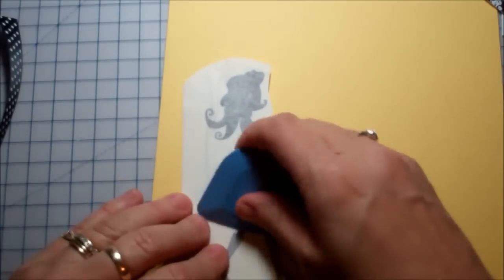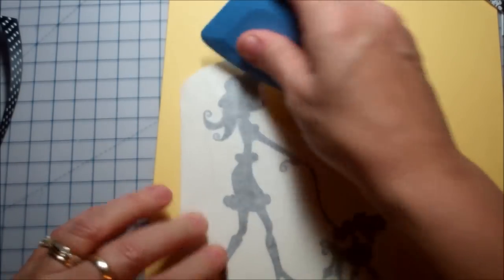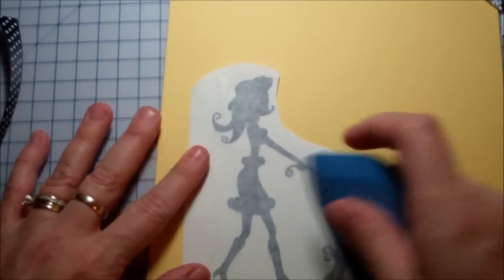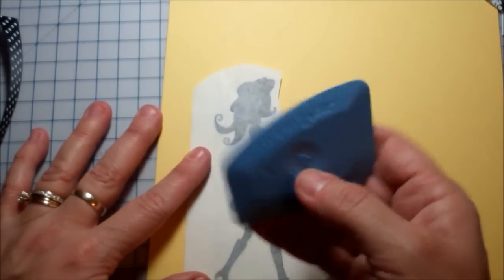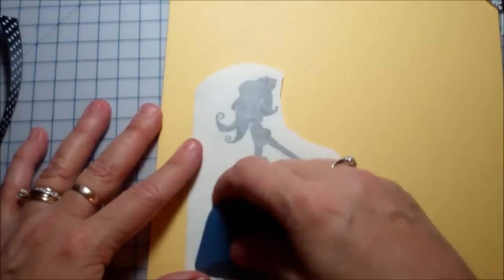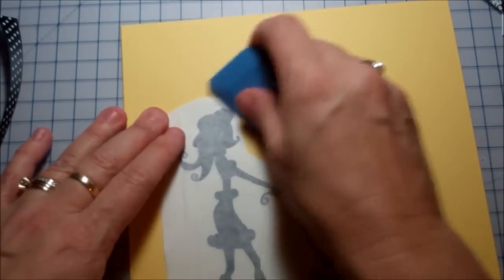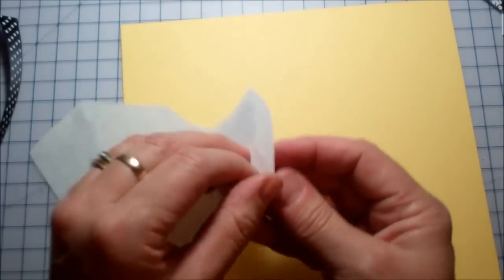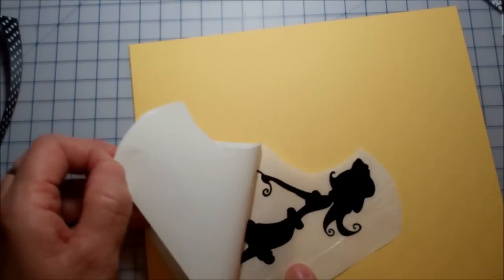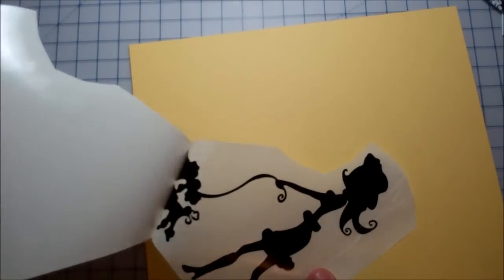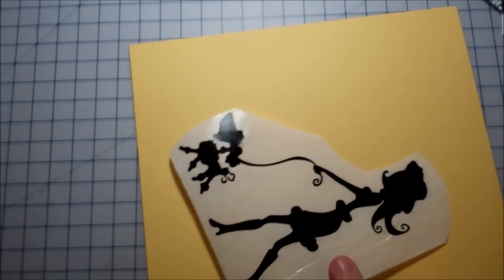So now what I'm going to do is I'm going to go ahead and rub her onto my background paper. So what you do first is you burnish it. I just use this little plastic tool, it's called a little chiseler. Just go ahead and burnish it. Then you're going to take the back and peel it off carefully and toss that away.